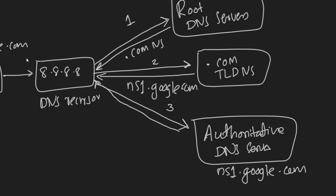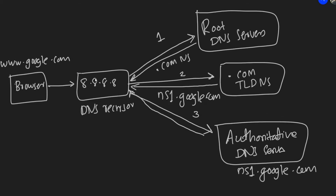After this third iteration, our DNS recursor has finally found the IP address for www.google.com and responds back to our browser. It also stores that information in the cache so that any subsequent request for the same domain name can be quickly retrieved from the cache instead of going through all these steps again.